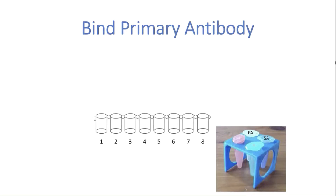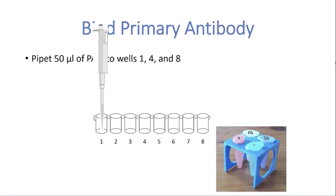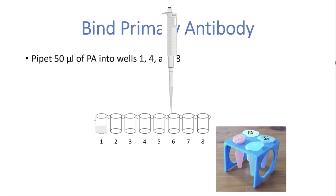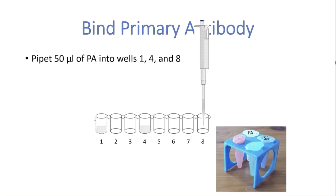In the next step, primary antibody is added to the wells. 50 µL of primary antibody is pipetted into wells number 1, 4, and 8 and allowed to sit for 5 minutes.